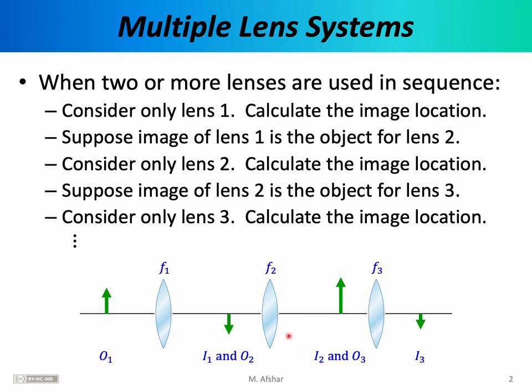Following this procedure, you can deal with 700 lenses and 200 mirrors all combined in series if you wanted to — you could even write a computer program to perform those calculations quickly. It's all a matter of repeating the same set of equations for each optical element. The important fact is that you treat the image for one optical element as the object for the next.